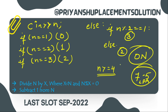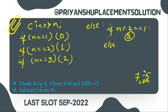This code will pass all the test cases. It's the easiest approach — you only need to understand what the question is asking, which is minimum steps. Let's verify for N equal to 94.